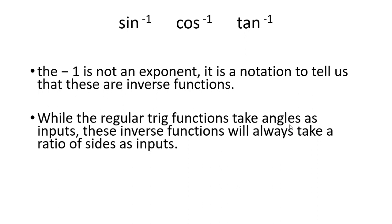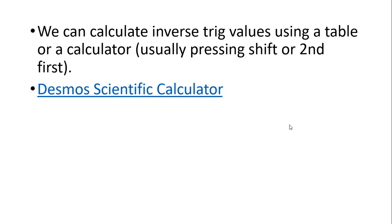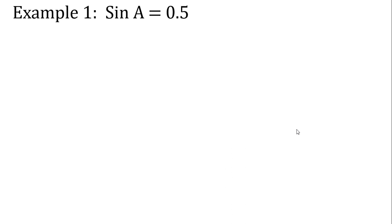While the regular trig functions take angles as inputs, these inverse functions will always take the ratio of the sides as inputs. Our goal now is to find the angles and not the sides. We can calculate the inverse trig values using a table or a calculator. With a scientific calculator you usually have to push a second or shift button to get to the inverse functions, but since not everyone has a scientific calculator at home, we're going to be using the Desmos decimal scientific calculator online as practice.